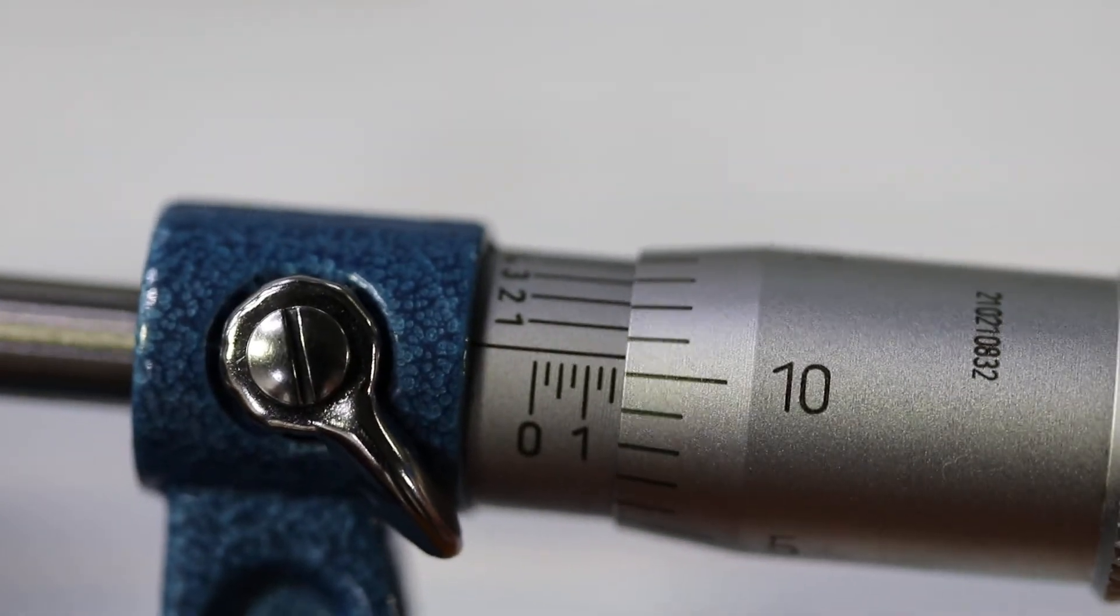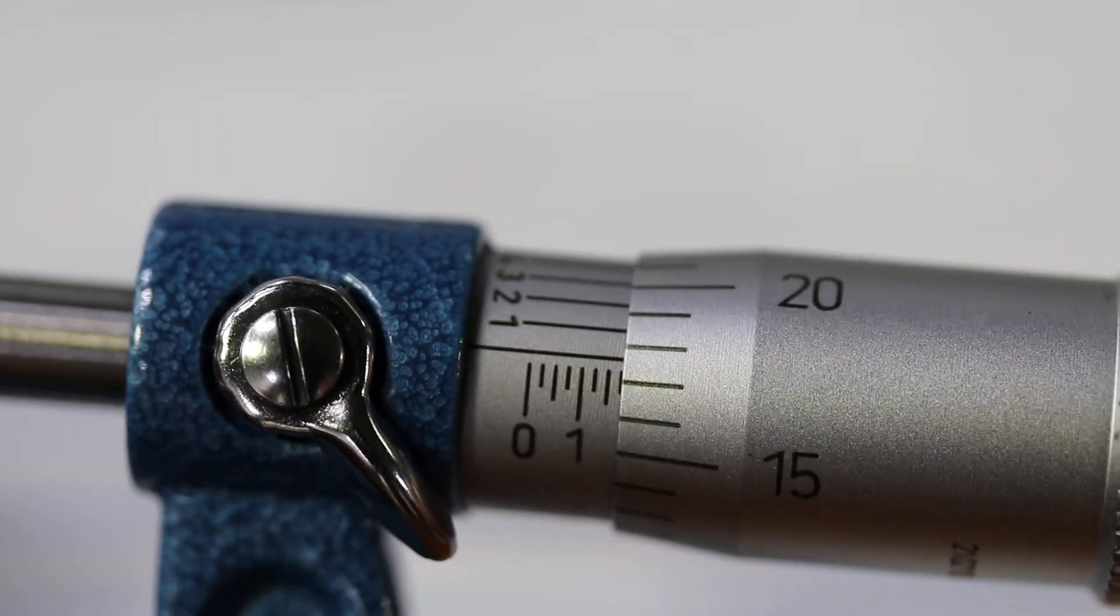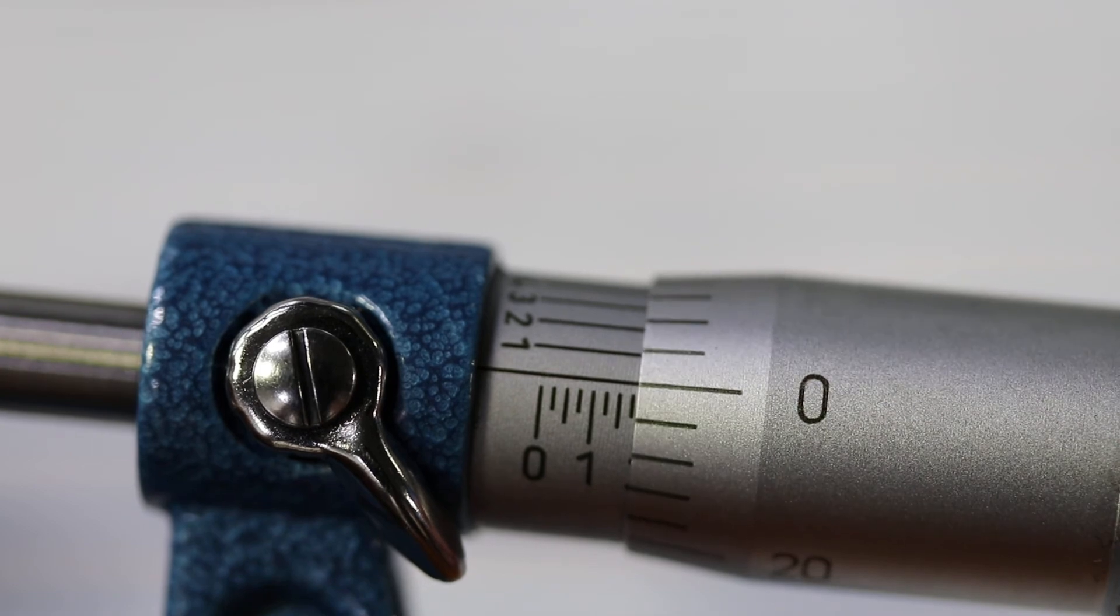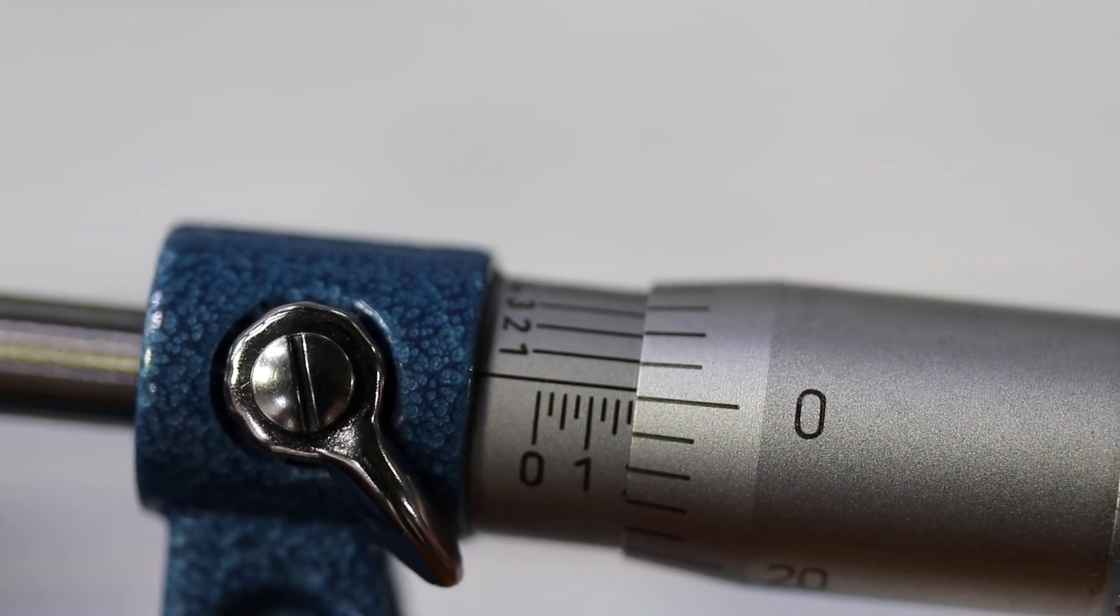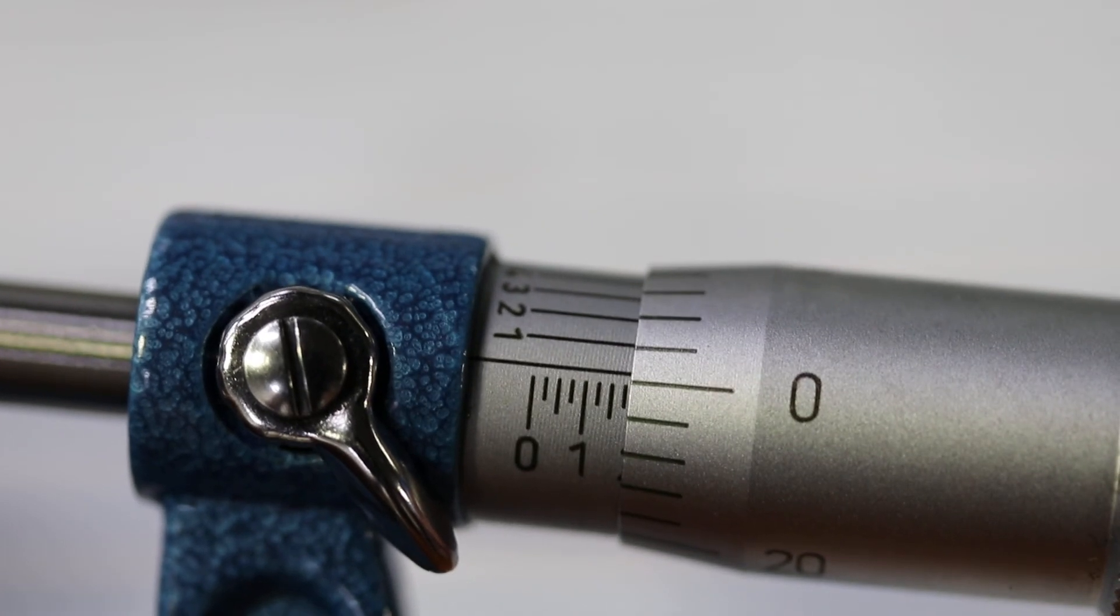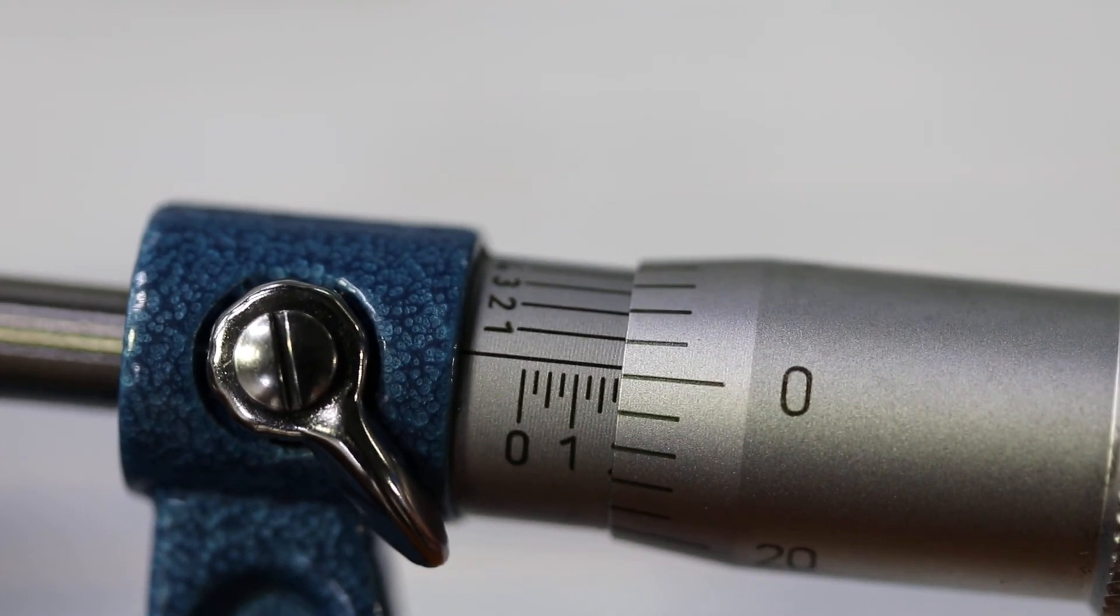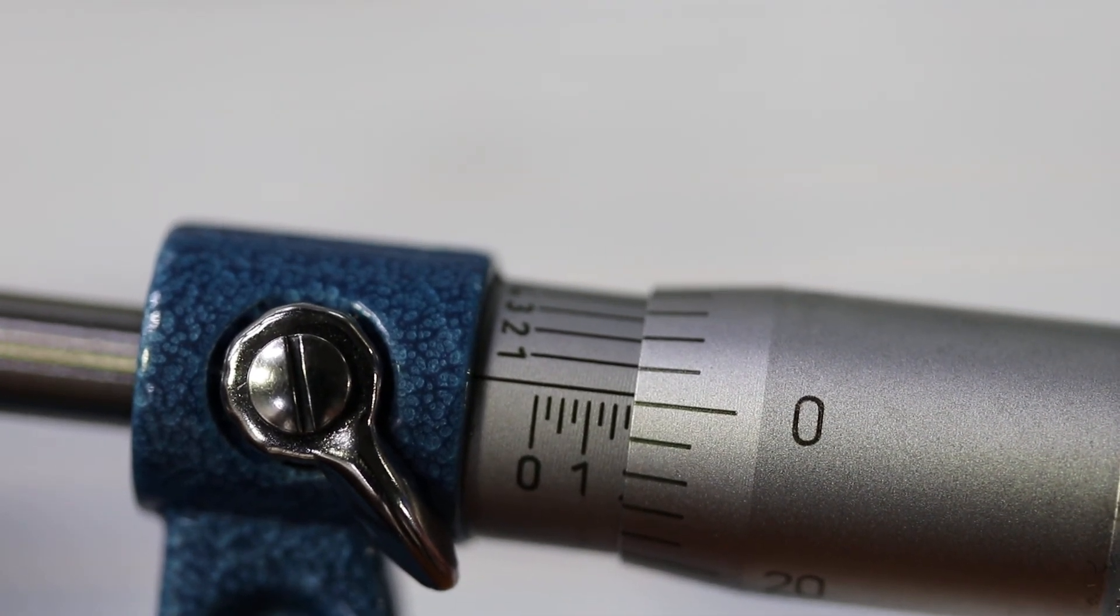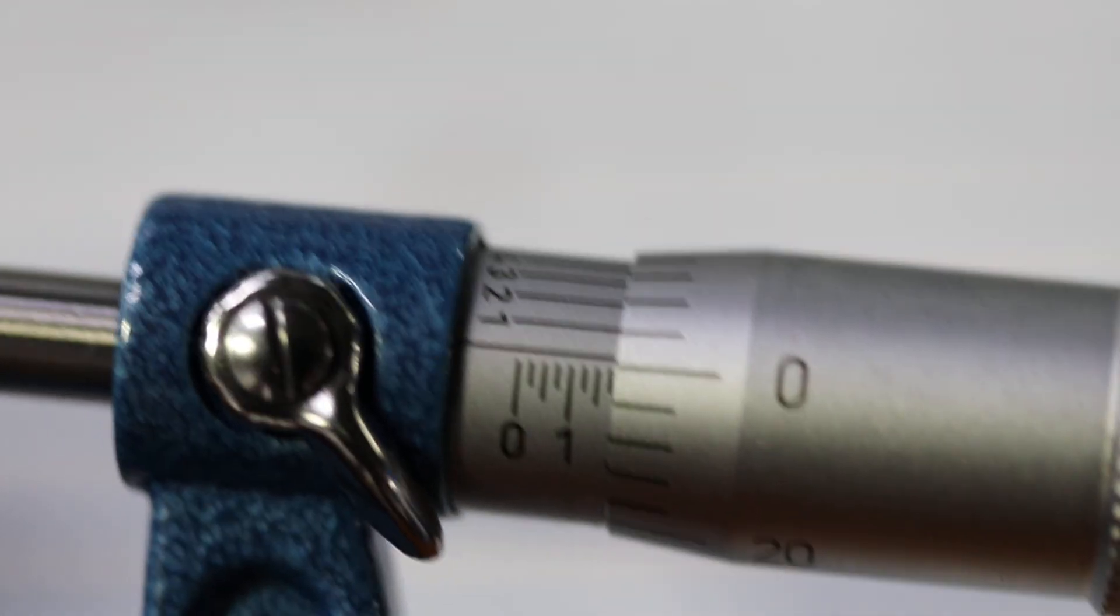Every time it passes one of those lines, that's 0.025. So right now we've got a one plus 25, 50, 75. So that would be 0.175. That's how you read a standard micrometer.